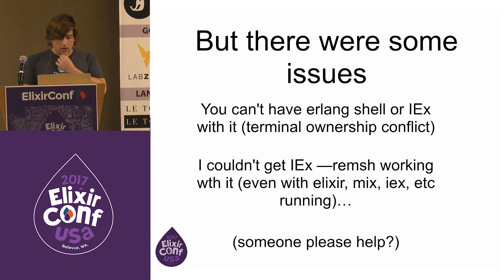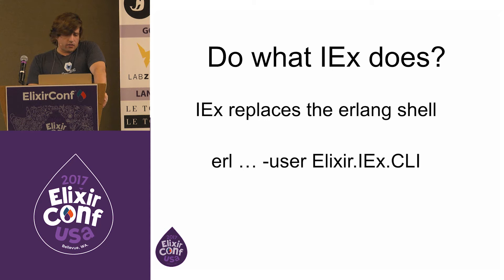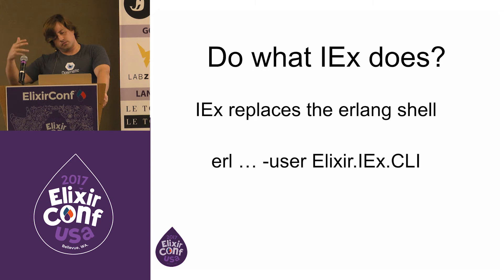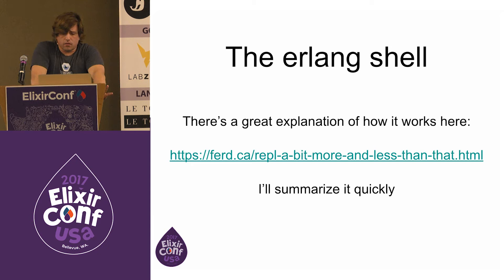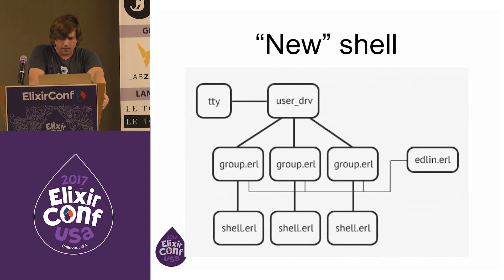I thought: maybe I can do a port. Then I looked at what IEx is doing — IEx actually replaces the Erlang shell. It calls '--user Elixir.IEX.CLI' and says 'instead of running your shell, run mine instead,' and you can implement that. I looked at how much code that would take and said 'maybe I'll do that at some point, not next.' There's also a great explanation of how the Erlang shell works: you had an old simple shell — send commands, it evals them, sends back. They've updated that to a new shell which is a tree of processes.